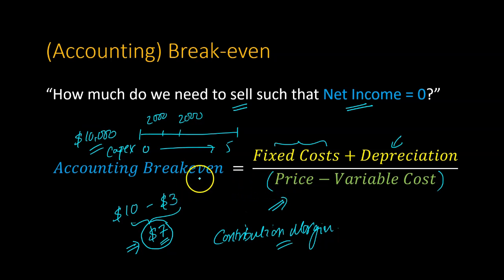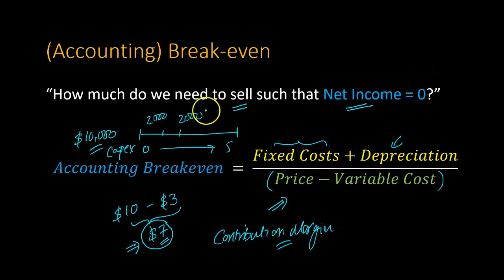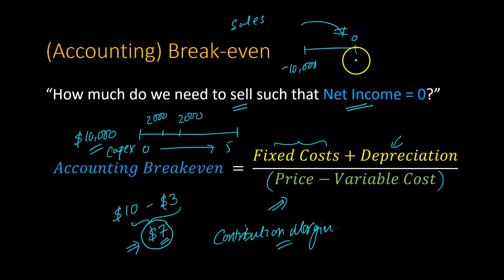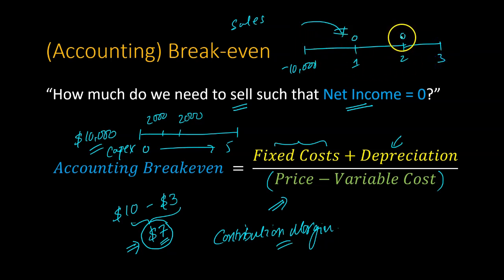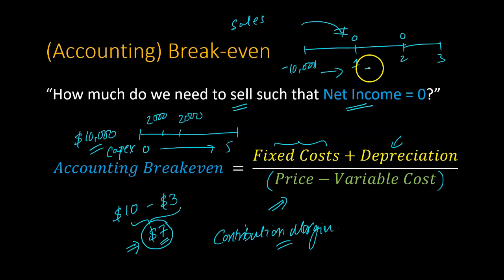Accounting break-even is purely trying to determine how much you need to sell such that you break even in an accounting sense — meaning net income equals zero. However, the problem is: imagine you're doing a project spending $10,000 upfront, and your net income is zero in year one, zero in year two, zero year three, and so on. While you're breaking even, this is not a profitable project. In terms of time value of money, you're losing money each year, and you're also losing the opportunity cost — the next best thing you could have done with your money.